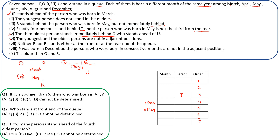The sixth clue: the youngest and oldest persons are not in adjacent positions, so December and March will not be together. The seventh clue: neither P nor R stands at the front or rear end of the queue. The eighth clue is static: P was born in December, making P the youngest person.